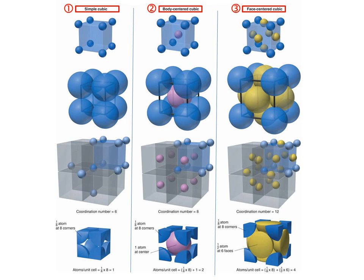In this slide you can appreciate different properties and representations for each of the cells. On top is the representation we have used. The next row shows the lattice points blown up until they come into contact, to show how space is filled in each structure. The third row shows the symmetry around each lattice point, giving the coordination number, which increases from 6, to 8, to 12 in the FCC structure. This also allows you to count the number of lattice points per unit cell.